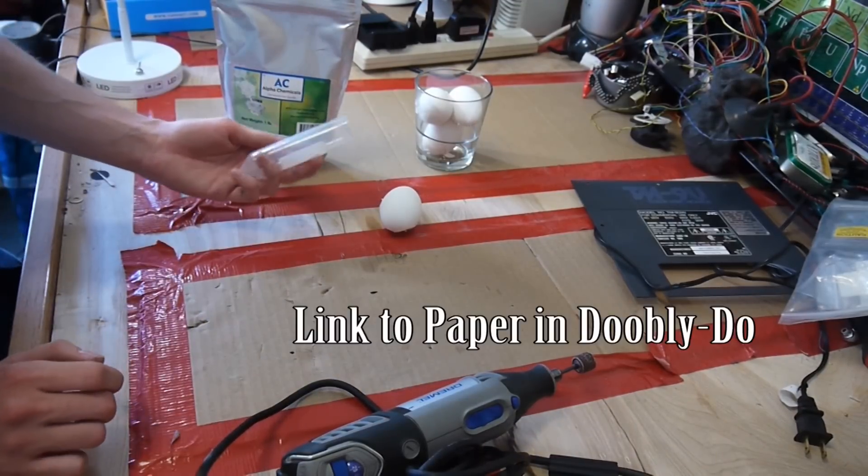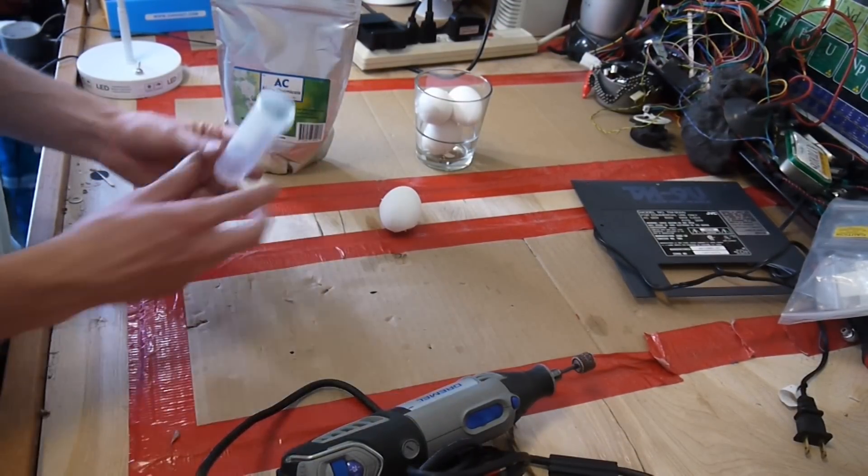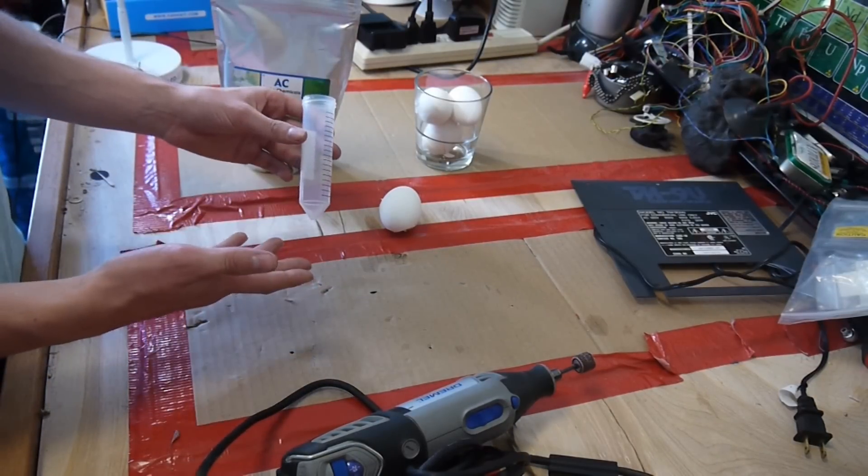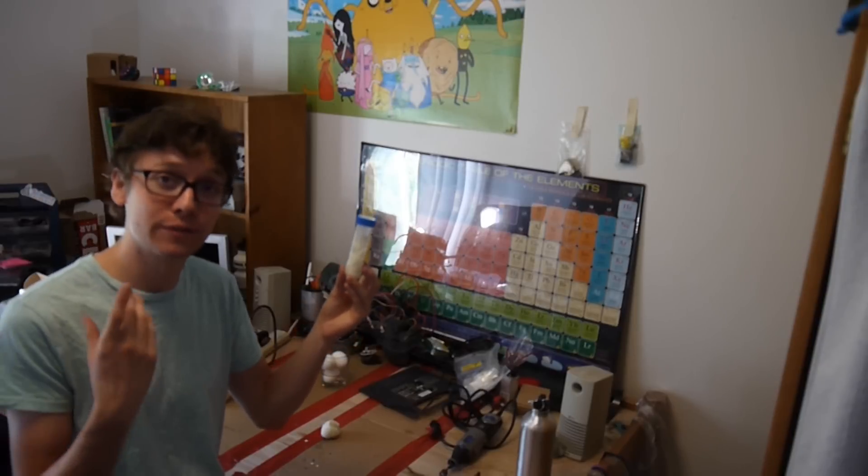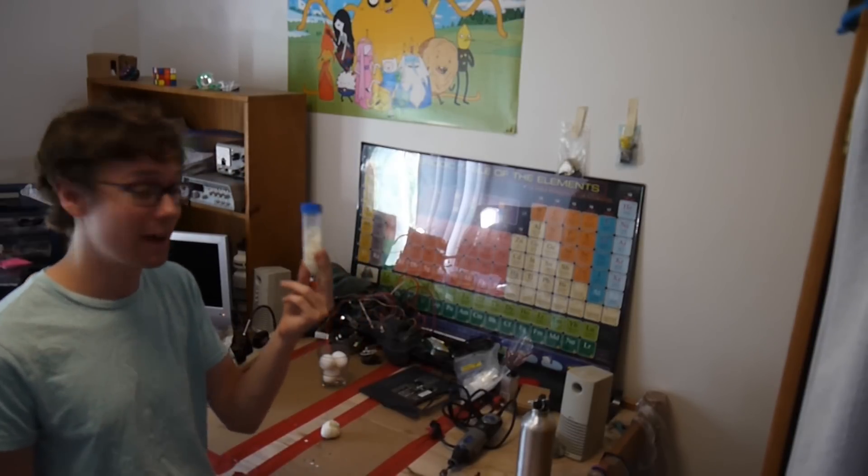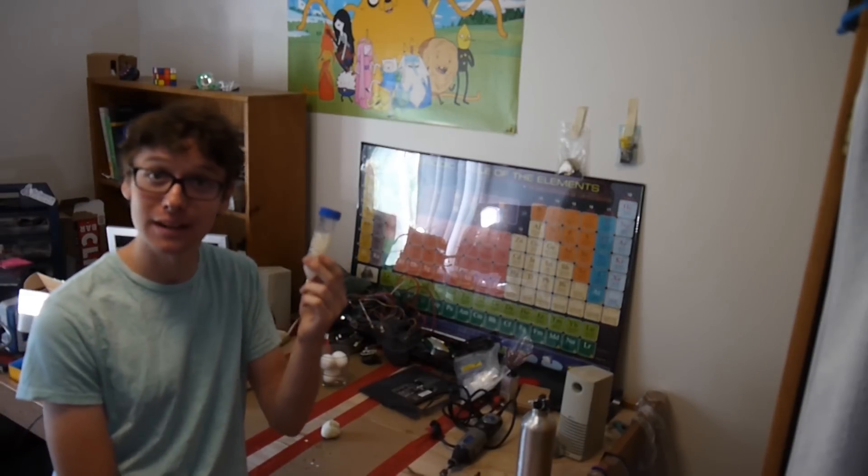So the method that the researchers described to unboil an egg involved putting it through a process that put a tremendous amount of shear force on the proteins within the eggs. This is generally done using very complicated machinery and we're here in my dorm room now and I barely have this single centrifuge tube. So we're gonna improvise.